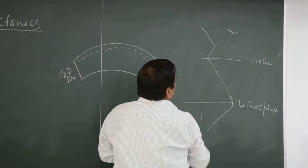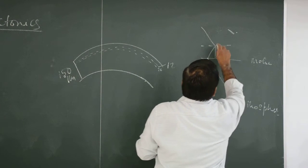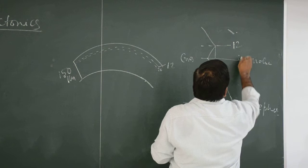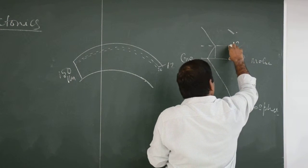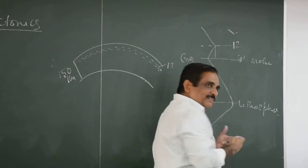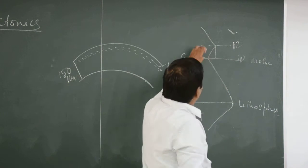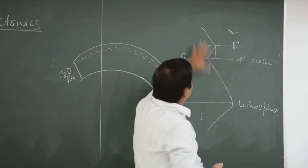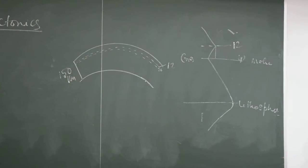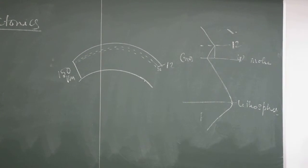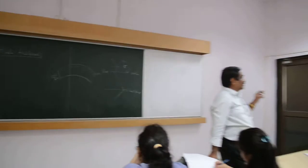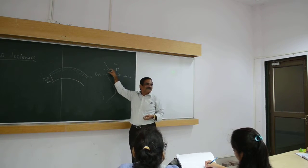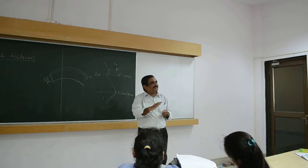This is the lithosphere. This 12 km to 40 km ductile part is within the crust. But once you cross the crust, the layer becomes brittle again. So this is a very thin ductile layer within the lithosphere. If you leave this ductile layer aside, the entire lithosphere is brittle, solid, and strong.